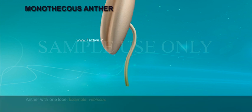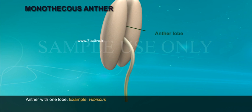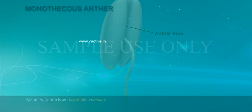Monothecous anther: An anther with one lobe. Example: Hibiscus.